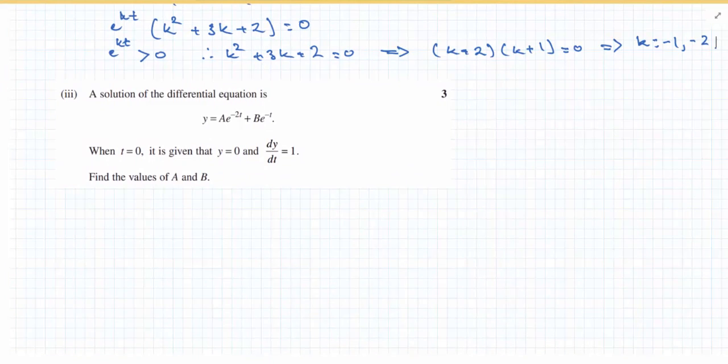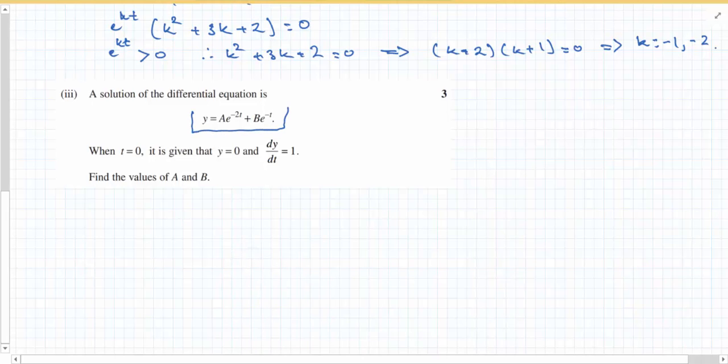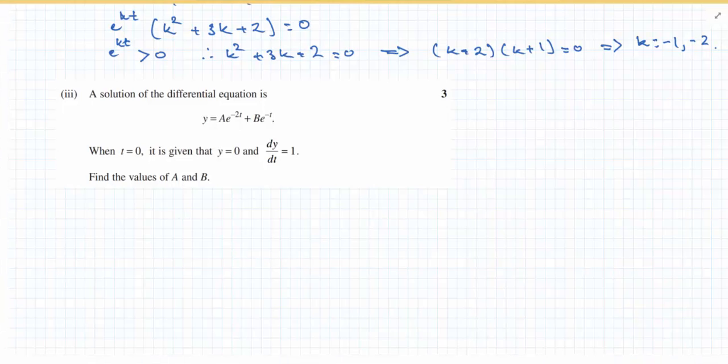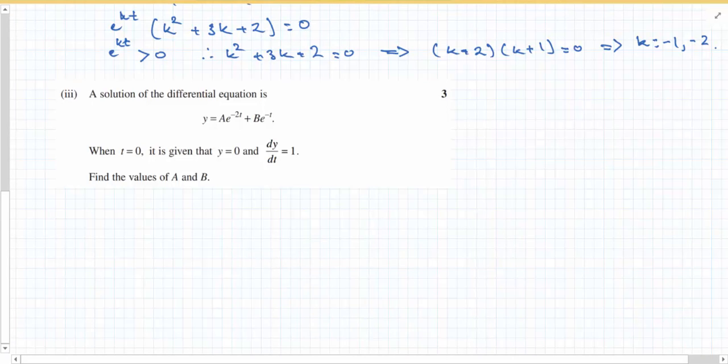Part 3, worth 3 marks. A solution of the differential equation is... So they've told me that this is a solution. Now, it sort of makes sense. If my k is negative 1, that's here. K negative 2, that's here. And we showed that a f(t) plus b g(t) is a solution. So we're drawing on previous solutions here. So we've got a solution. And then they've given us this condition. When t equals 0, it is given that y equals 0 and dy/dt equals 1. Then it says find the values of a and b.